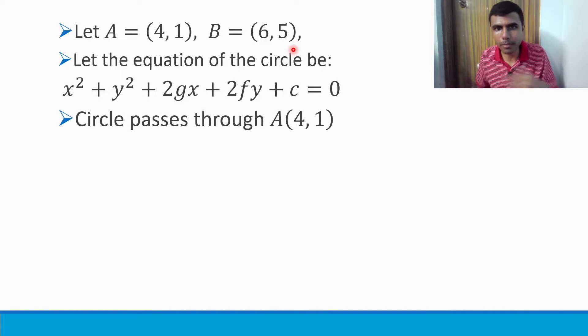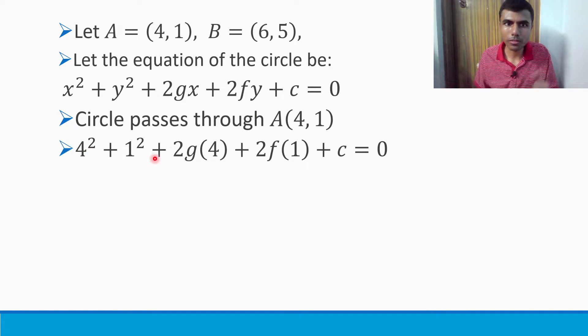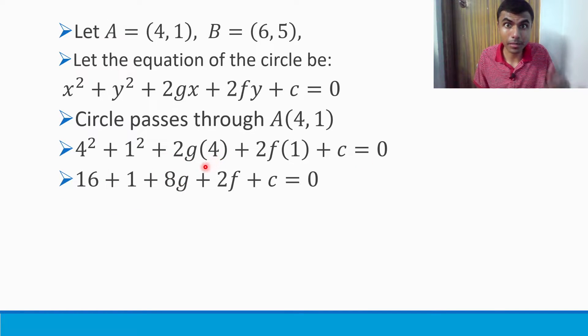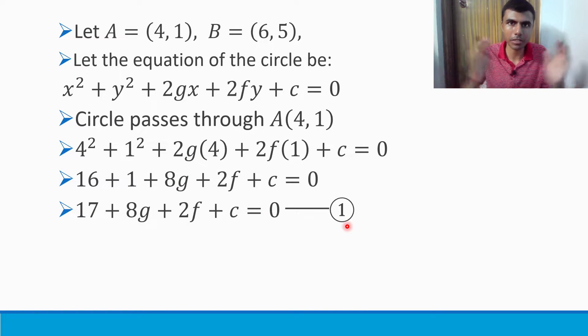Since the circle passes through A(4,1), instead of x and y, I can substitute 4 and 1. So 4² + 1² + 2g(4) + 2f(1) + c = 0. This gives us 16 + 1 + 8g + 2f + c = 0, which simplifies to 17 + 8g + 2f + c = 0. Mark it as equation 1.